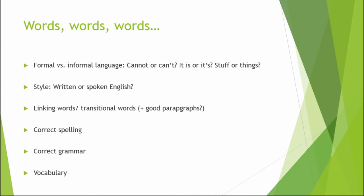When writing an essay, you should consider the differences between formal and informal language. 'Cannot' is formal, 'can't' is informal; 'it is' is formal, 'its' is informal; 'stuff' is informal, while 'things' is formal. When writing an essay at school or at an exam, you should use formal language. This means don't use abbreviations like 'can't' or 'it's', and don't choose informal words like 'stuff' when you can say 'things'. Also think about the style — avoid using terms and words that are spoken English, and try to have a style that is as formal and as written as possible.